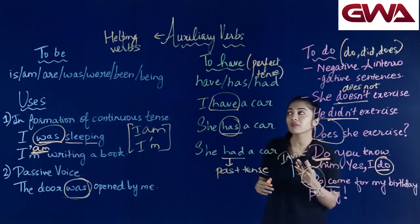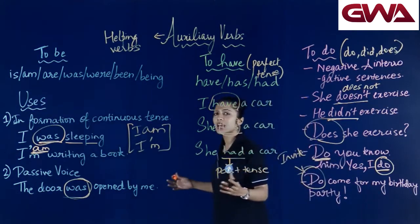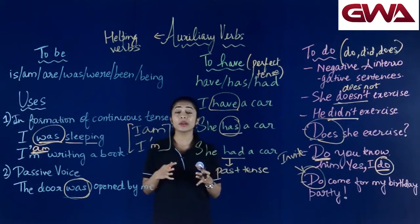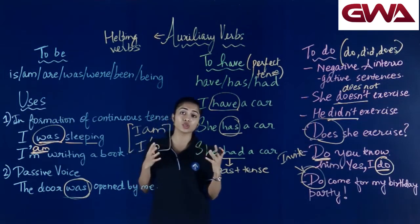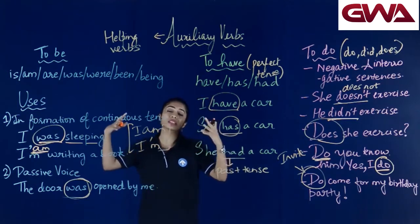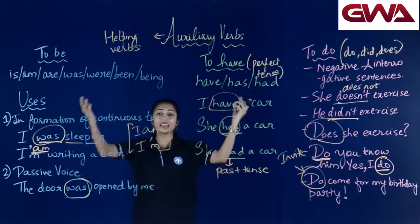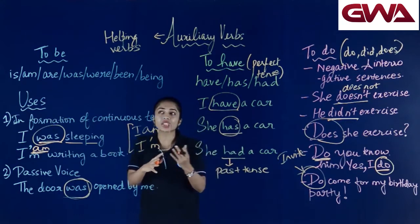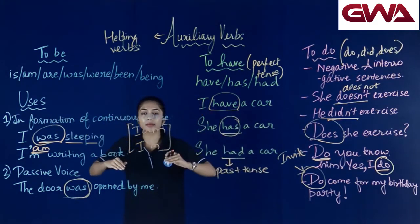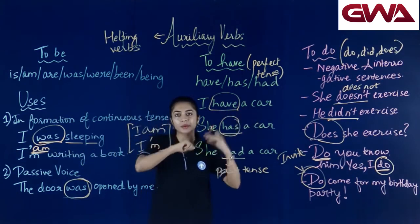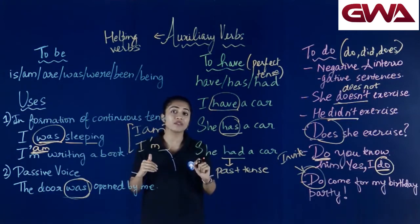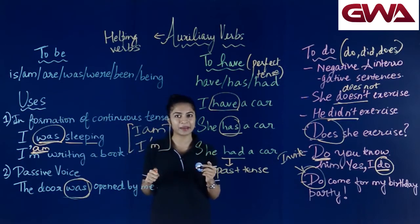I hope आपको auxiliary verbs — basically helping verbs — अच्छी तरह समझ में आए। ये sentence में complete meaning add करते हैं। When it comes to tenses also, ये helping verbs काफी useful होते हैं, क्योंकि इनसे हमें पता लग जाता है कि हम present के बारे में बात कर रहे हैं, past के बारे में, या future के बारे में। Until next time, happy learning!